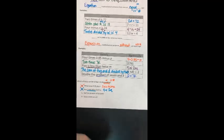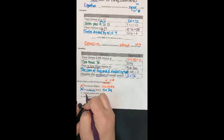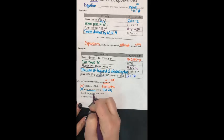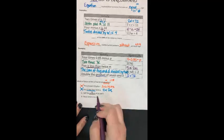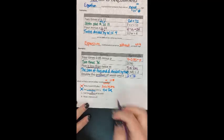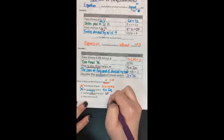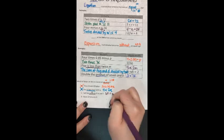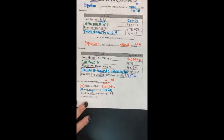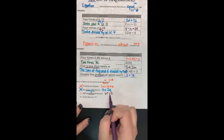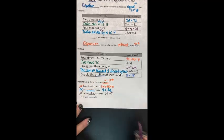So our next one says half. Half is like dividing by 2. The product, product is multiplication of 6 and t. So we did 6t, and then half would be dividing by 2. Again, we don't have an is, we didn't have an equal sign, so it can't be C.